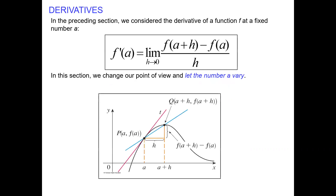That was the definition from the previous section. F prime at A — that's the derivative at the point A — is the limit as h goes to 0 of f of A plus h minus f of A, over h.